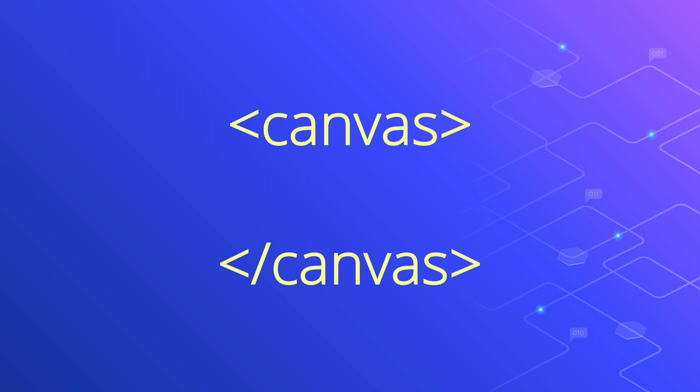The canvas is entirely transparent. If we want it to have, say, a border, we can use some CSS as well. To do something useful with our canvas, we need to give it an ID. Once it has an ID, we can get a reference to it with JavaScript.